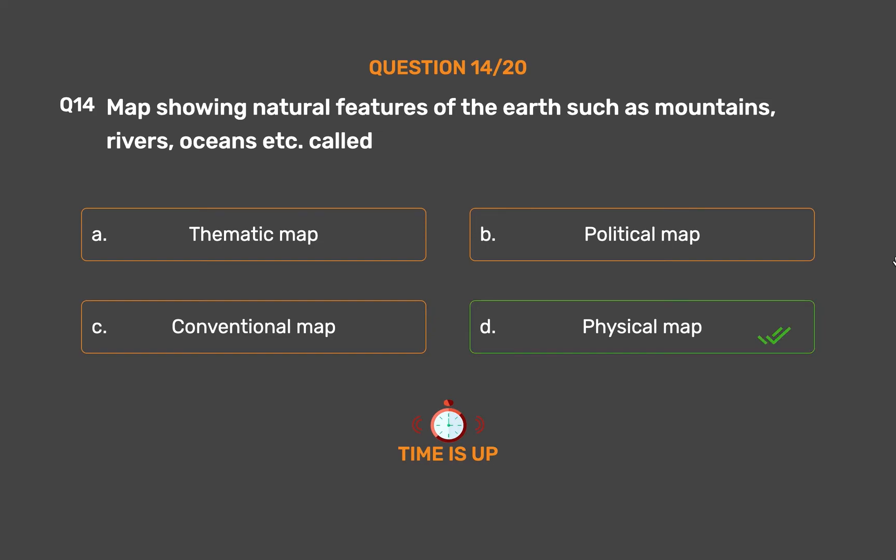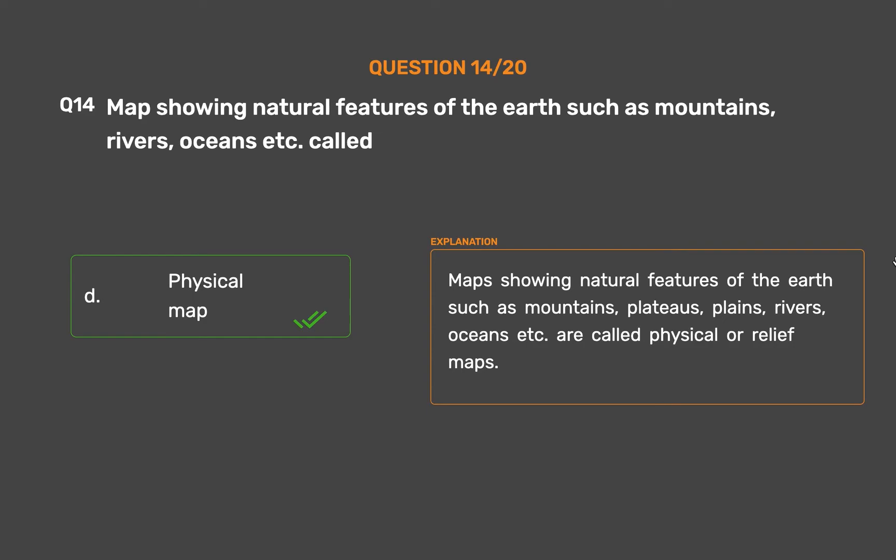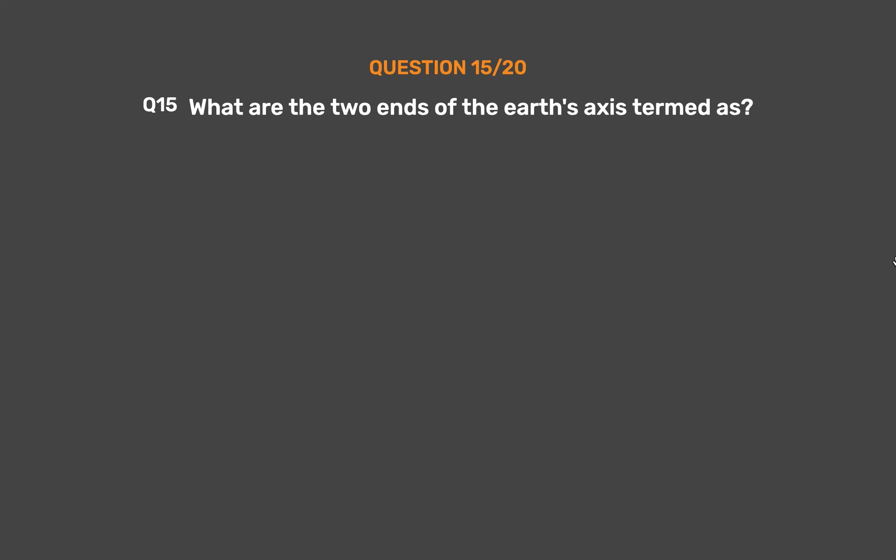The correct answer is Option D: Physical map. Maps showing natural features of the earth such as mountains, plateaus, plains, rivers, oceans, etc. are called physical or relief maps.